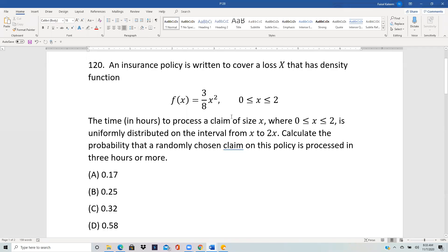An insurance policy is written to cover a loss X that has density function 3x squared by 8. The time to process a claim of size x, where x is between 0 and 2, is uniformly distributed on the interval x to 2x. Calculate the probability that the randomly chosen claim on this policy is processed in three hours or more.